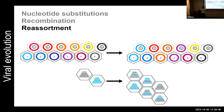Some segmented viruses package each chromosome into a separate particle. Imagine we're all going to a party: instead of everyone taking one bus and arriving together, we each drive our own car. Some might arrive, some might get lost. This adds modularity to the system because genomes are not fixed, but it also introduces complexity.